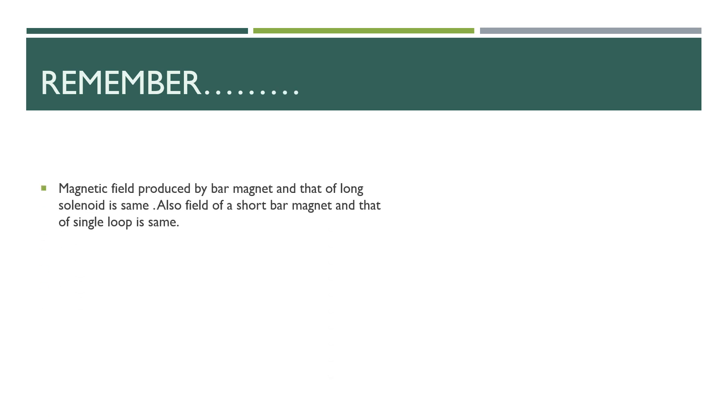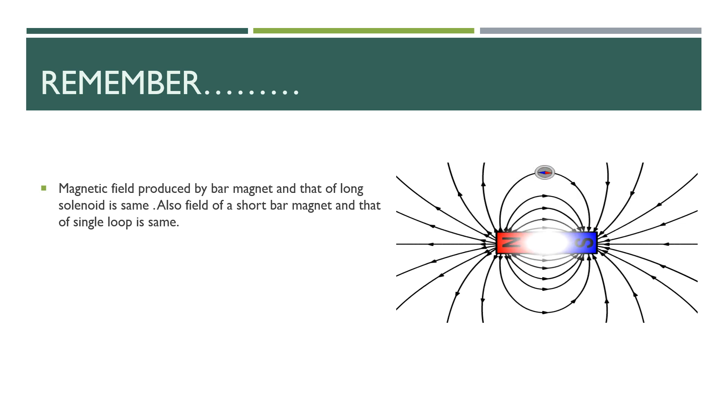From the study of the magnetic fields which are produced by the bar magnets and the moving charges, commonly known as currents, it is possible to trace the origin of the magnetic properties of the material.